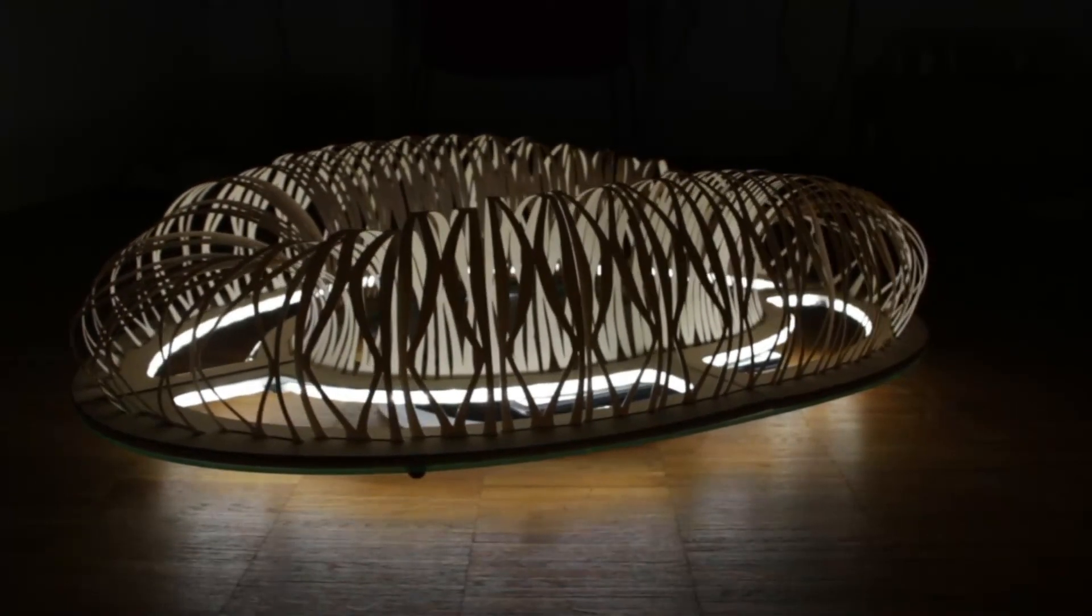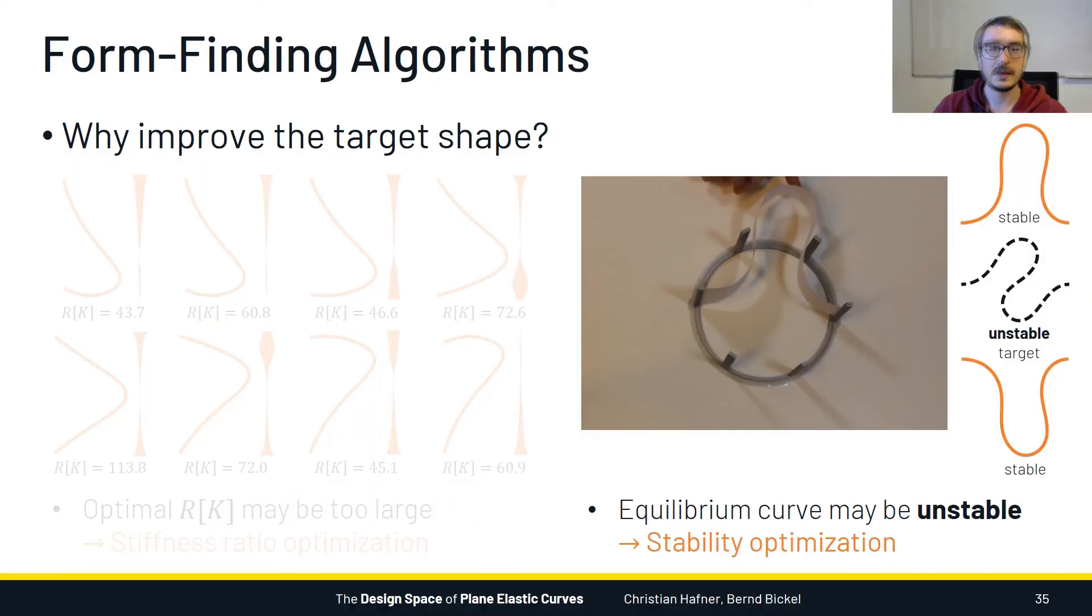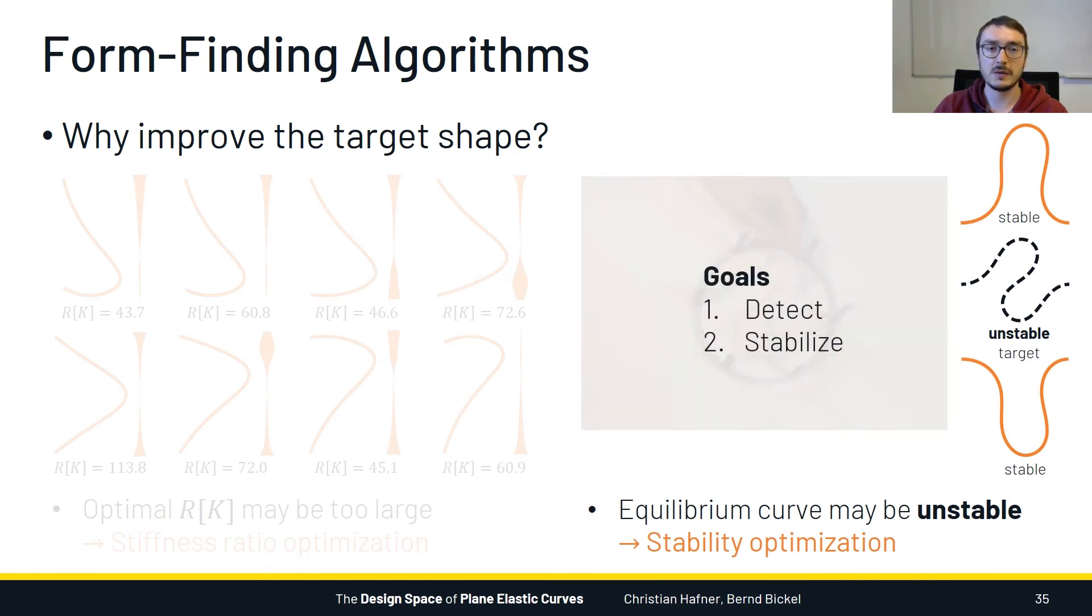The last topic that I want to briefly touch on is the second reason of why we might want to improve the target shape. And that's the problem of instability. So it may happen that our target curve is an unstable equilibrium. And what this means is that any small physical perturbation will make the curve snap out of its target shape and into a different stable configuration. What we would want to do in this case is first to detect unstable target curves, and then to stabilize them by modifying the control points.